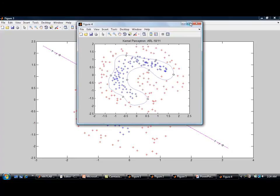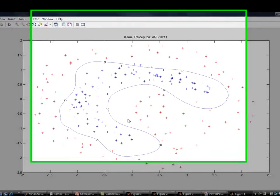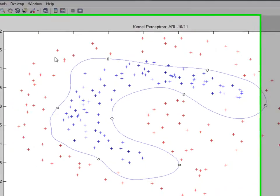So here's a kernel, the Gaussian kernel with sigma one. And here, as you can see, the kernel has separated these two classes.